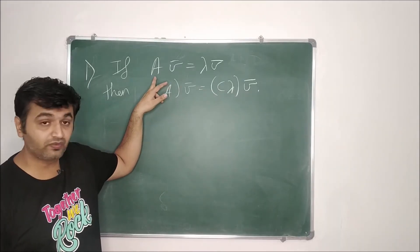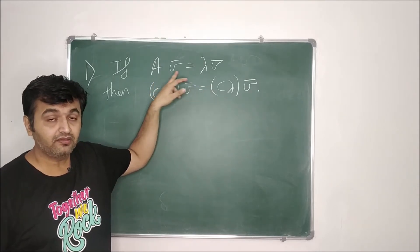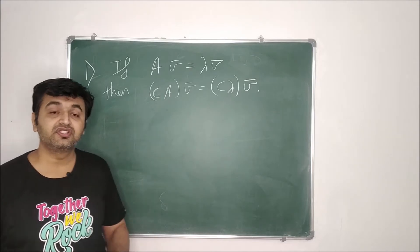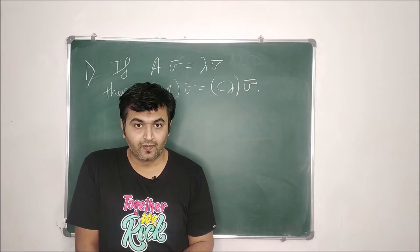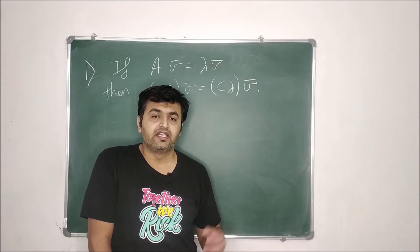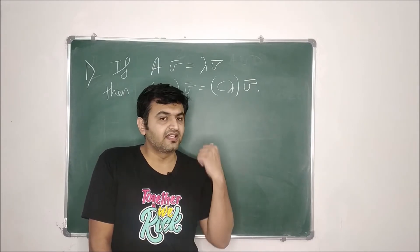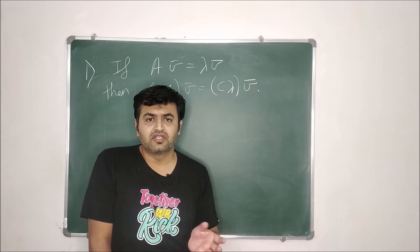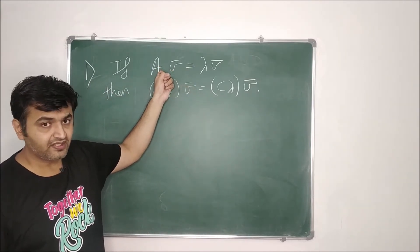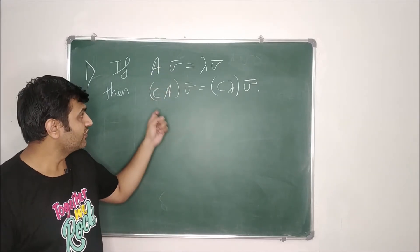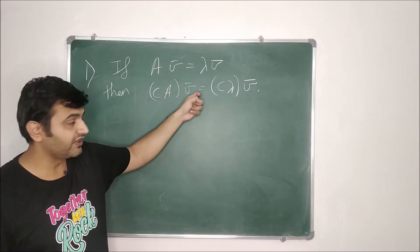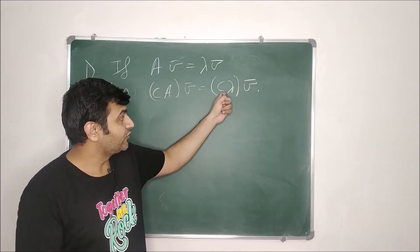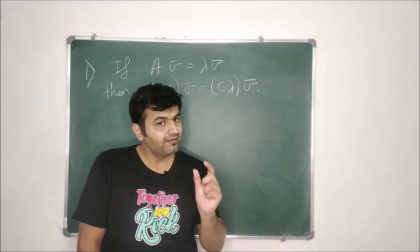The first result says: if you have a square matrix A of order n whose eigenvalue is lambda and eigenvector is v̄, and if you multiply A by a scalar C to get CA, then the eigenvalue of CA is C times lambda, but the eigenvector remains the same. So if you know the eigenvalues and eigenvectors for A, you also know them for any scalar multiple of A.